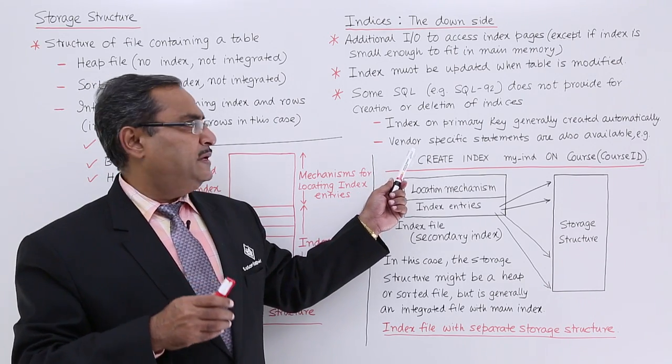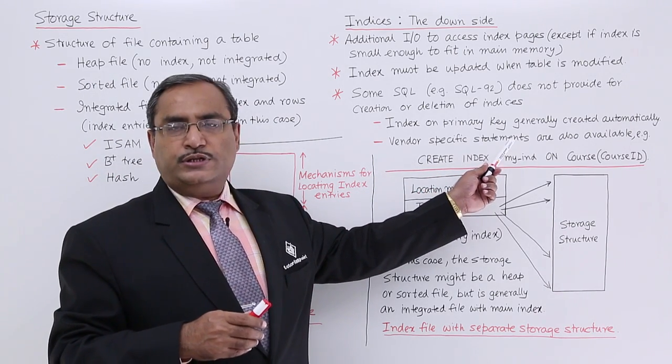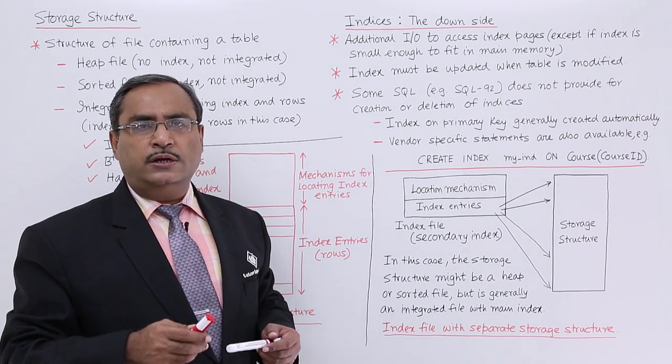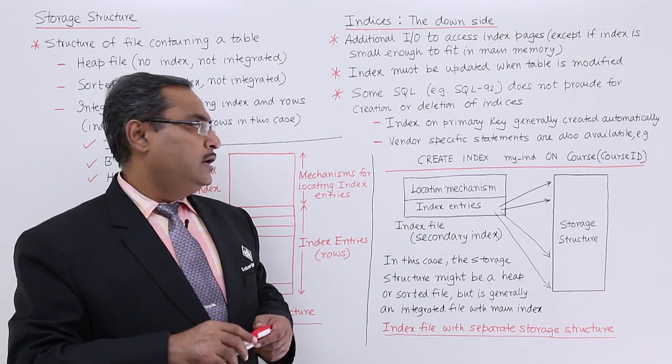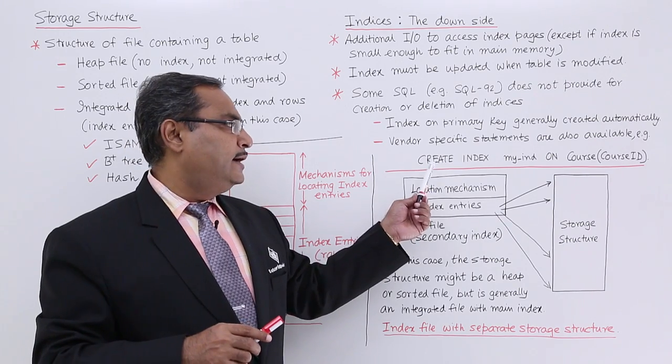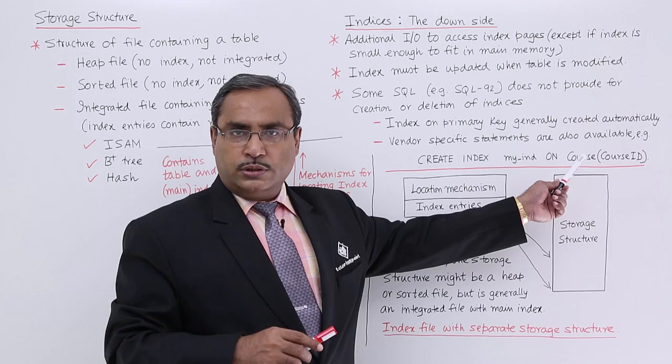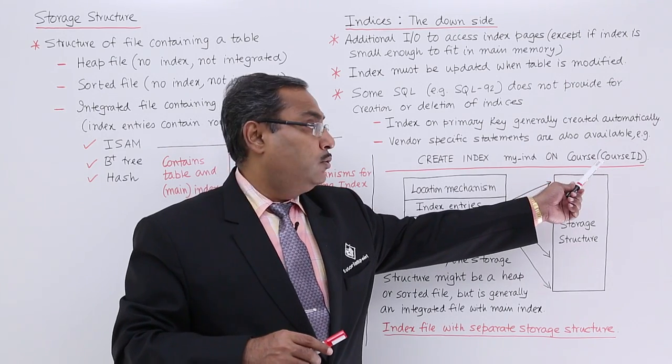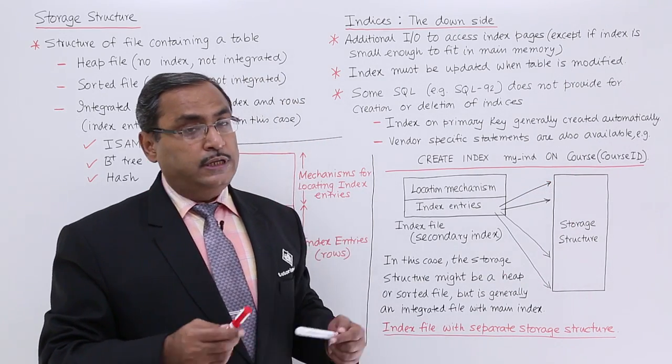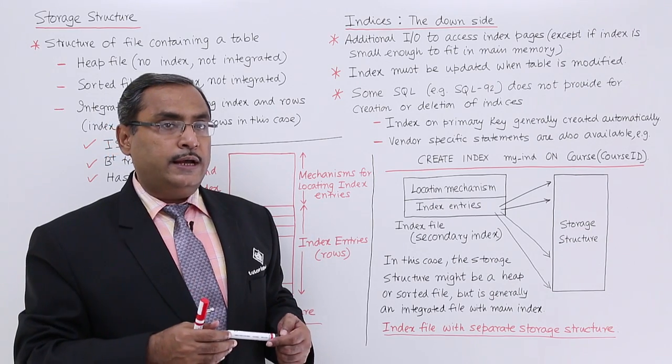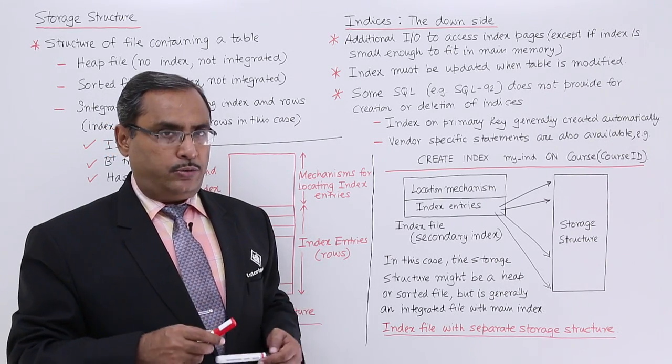we are having some vendor-specific statements which are available for creation or deletion of the index. One example we have given: CREATE INDEX myind ON course relation ON the course_id attribute. In this way, we can also create our own index as and when required.